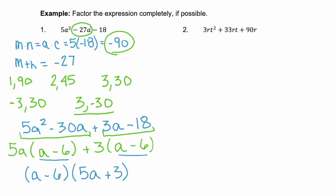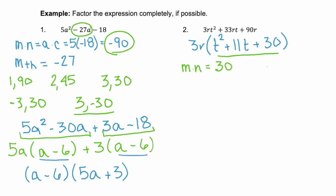Let's look at example two: 3RT squared plus 33RT plus 90R. Do you see the GCF? Yes — it's 3R. Factor out 3R and we get the polynomial T squared plus 11T plus 30. Does this remaining polynomial look like any of our special types of factoring? No. So let's use our m and n: m times n must equal 30 and m plus n must equal 11.